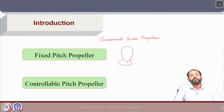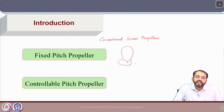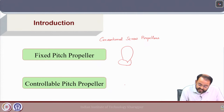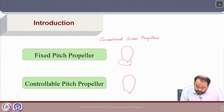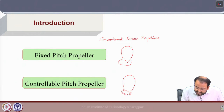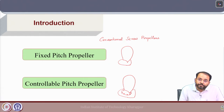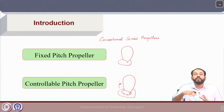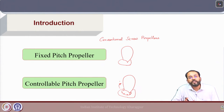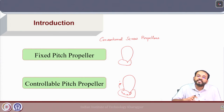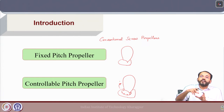On the other hand, there is another type of propeller which is very popular in the marine industry, called the controllable pitch propeller. For this specific type, as the name suggests, the pitch can be controlled. The propeller blade is mounted on a specific structure connected to the hub, and the pitch can be controlled by rotating the propeller blade on the mount. The blades are mounted on spindles connected to the hub, and can be rotated to change the pitch.